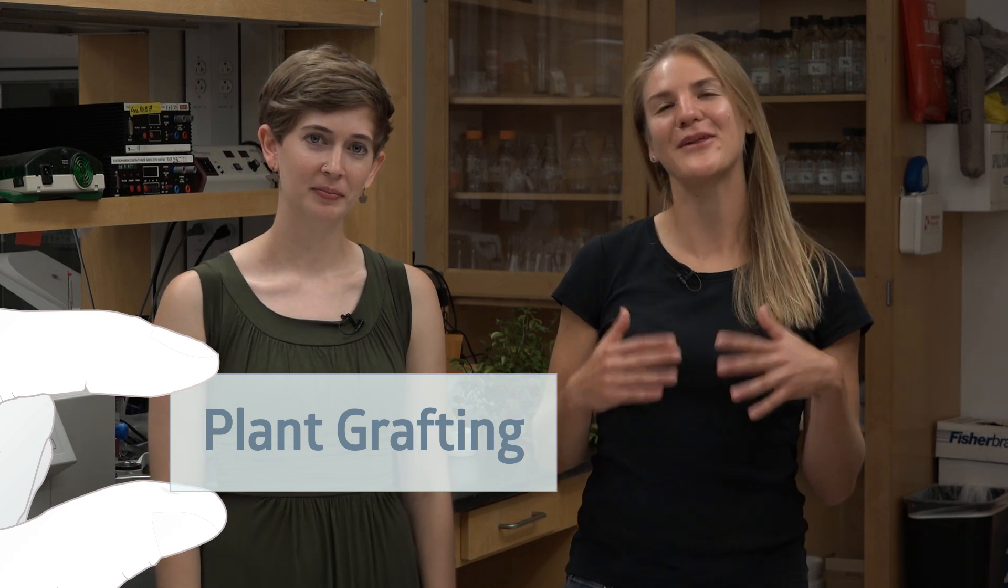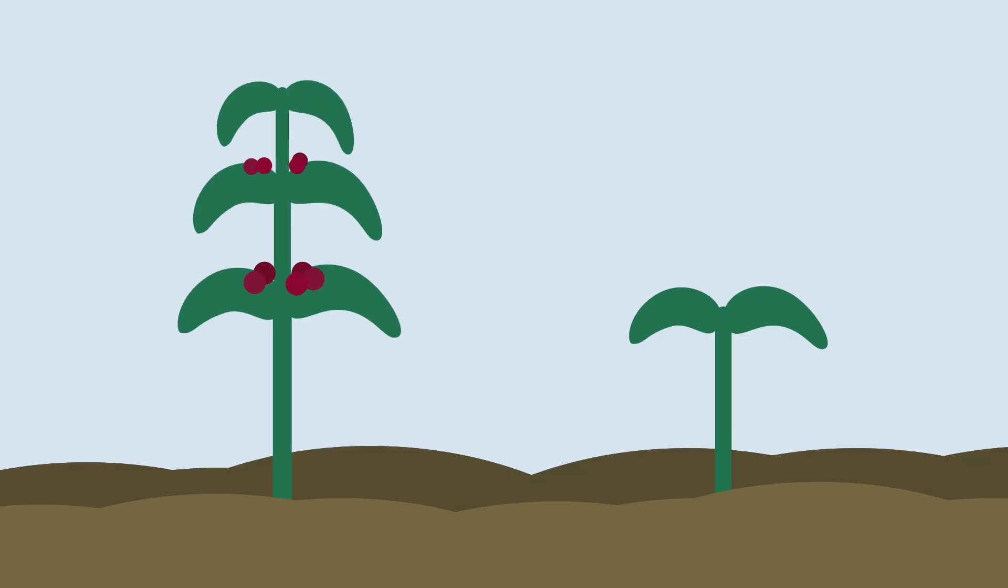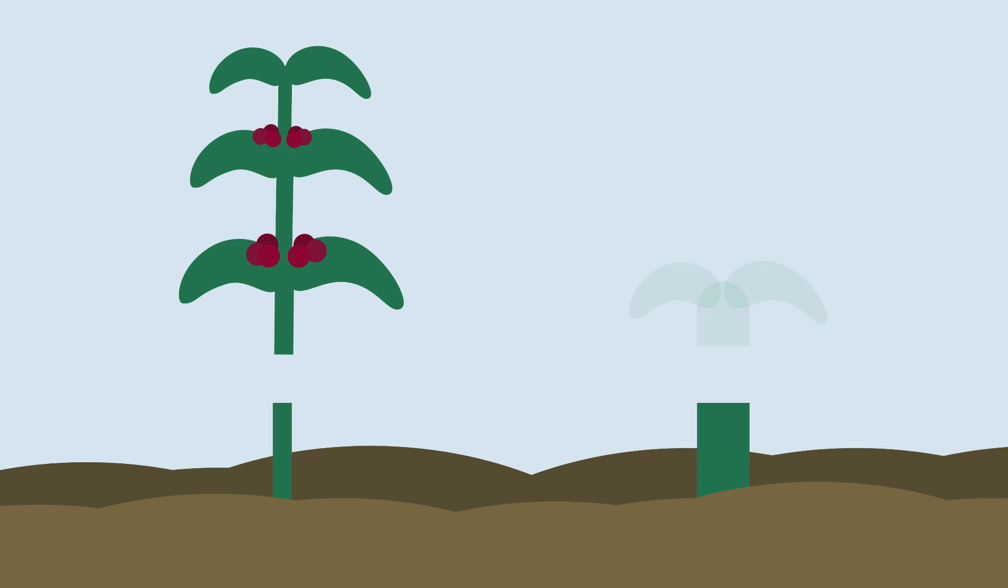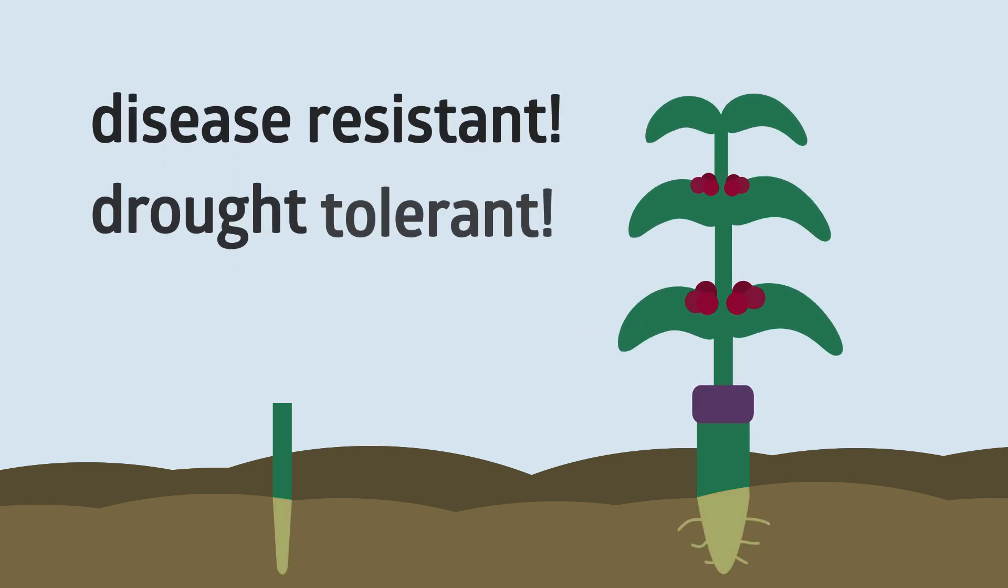So I study plant grafting, which is simply the physical joining of separate plant parts. And this goes back thousands of years and it's used to combine desirable traits from separate plants. So you can take your favorite fruit producing shoot and combine it with a super robust root stock, creating a plant that's disease resistant, drought tolerant, cold tolerant, etc. And this has super important implications for food security.